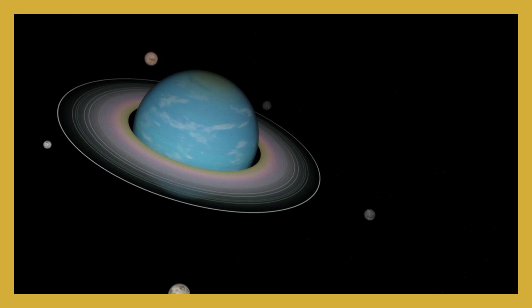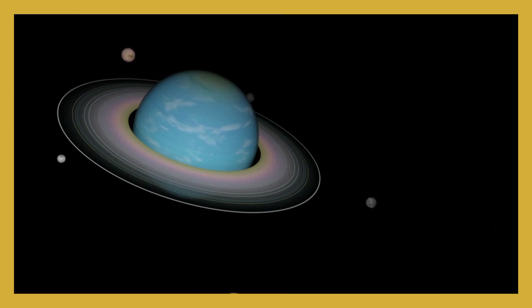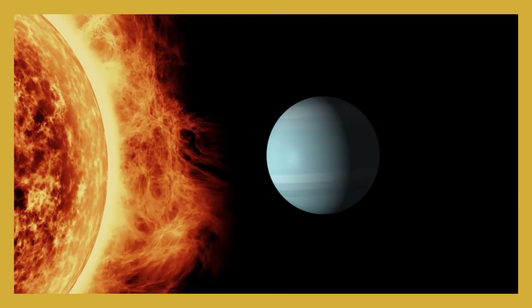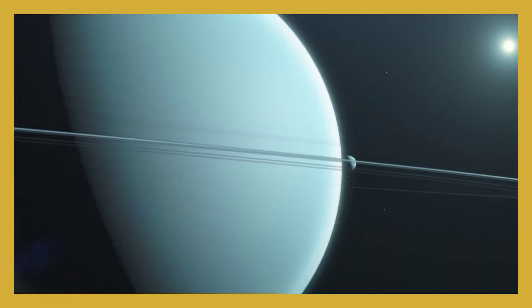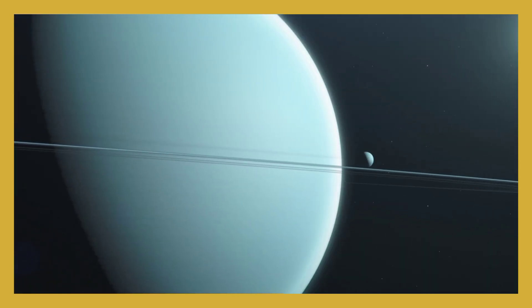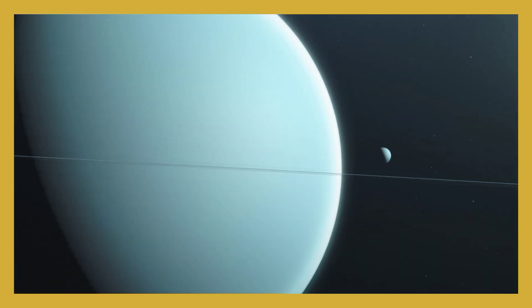Uranus tilts and rolls around, with Miranda's cliffs so high off the ground. Titania and Oberon, big and bold moons of ice, and rocks so cold.